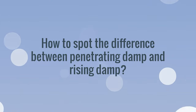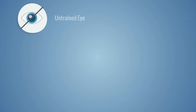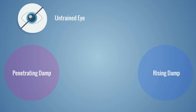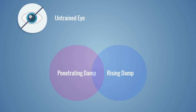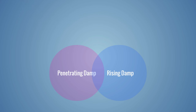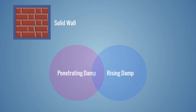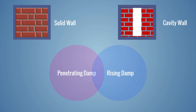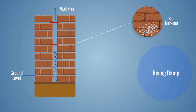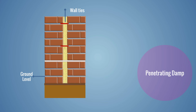How to spot the difference between penetrating damp and rising damp? To the untrained eye, it can sometimes be difficult to distinguish between the two forms of damp as there is a degree of overlap in the symptoms caused by both. While both are more prominent and more commonly found in properties constructed with solid walls, they can also affect buildings with cavity walls. With rising damp, this can be due to debris in the cavity bridging the existing damp proof course or another building defect. Meanwhile, penetrating damp is also possible in cases where poorly fitted cavity wall insulation has become wet due to wind-driven rain soaking through the external brickwork.